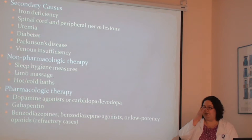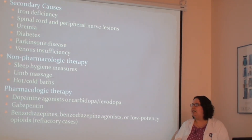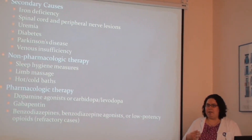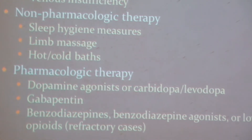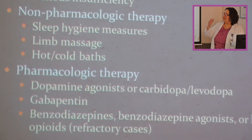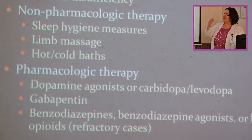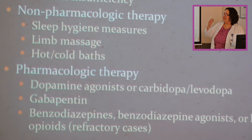Again, it's best to try behavioral therapy before turning to medications — good sleep hygiene, limb massaging to relieve discomfort, and hot or cold baths depending on preference. If medications are needed, dopamine agonists like carbidopa-levodopa, or ropinirole — which I think we commonly use at the VA — are usually first line. Gabapentin can provide relief if there's peripheral nerve pain. As a last resort there are benzodiazepine agonists and low-potency opiates, but these should only be used in rare, refractory cases.